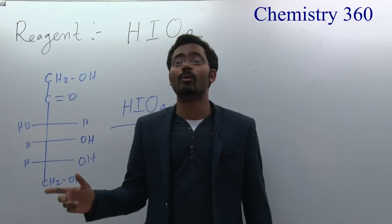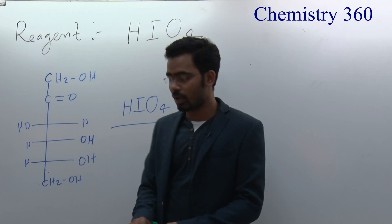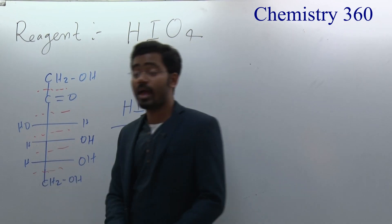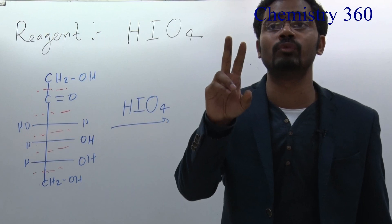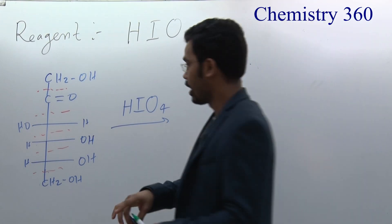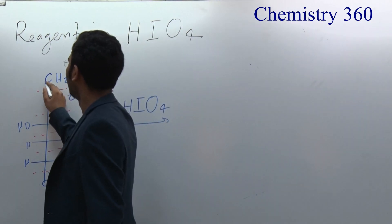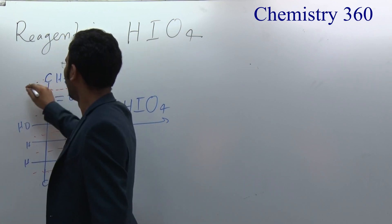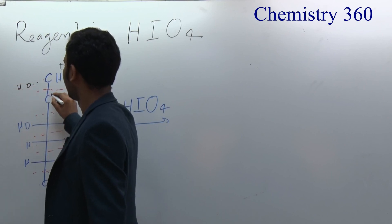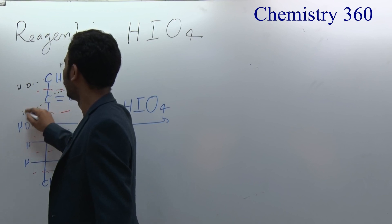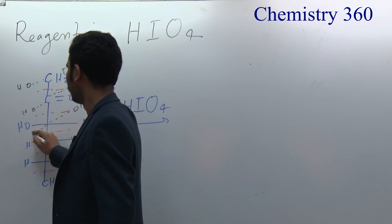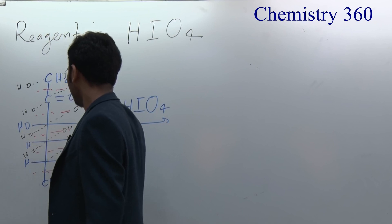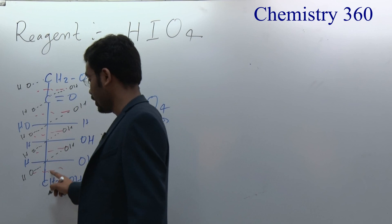If there is an oxygen on adjacent carbons, you break that bond. Break all such bonds, and for each bond broken, add 2 OH groups — one on each carbon. Then for each carbon, count the total OH groups: if a carbon has 1 OH added, check its original substituents to determine the product.